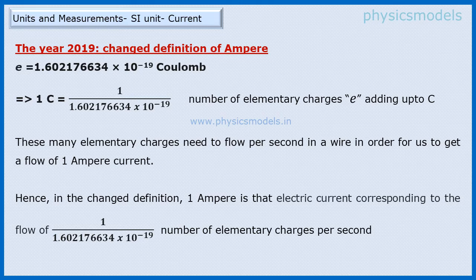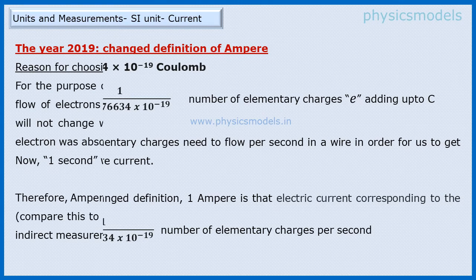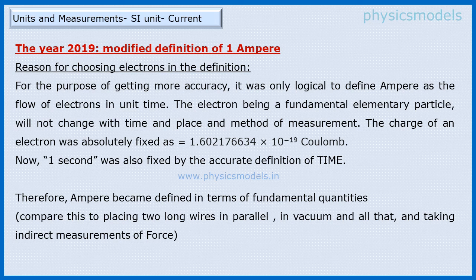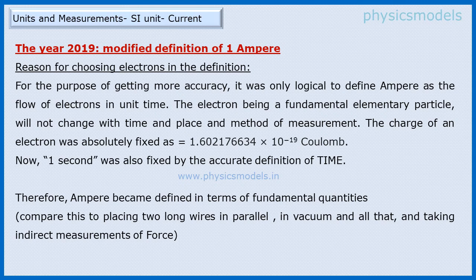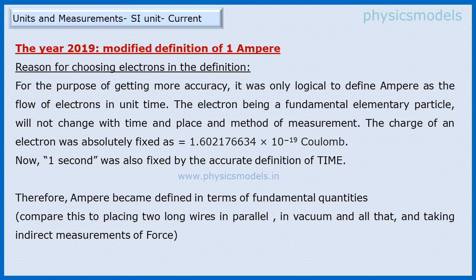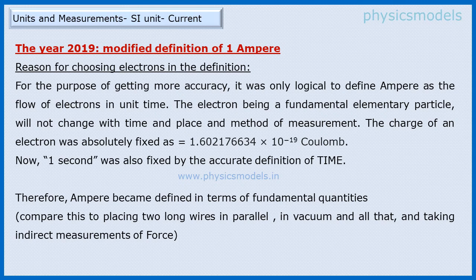Current, therefore the Ampere, is now defined theoretically. This slide describes once again the logic of the SI committee to redefine Ampere in terms of fundamental quantities which can always be verified, which can be repeated, and which will not change from point to point or from scientist to scientist. One of them, as I said before, is the charge of an elementary electron, which is 1.602176634×10^-19 Coulomb. The other fundamental quantity is one second, which is also very accurately defined. So now the definition of Ampere was cast in stone.